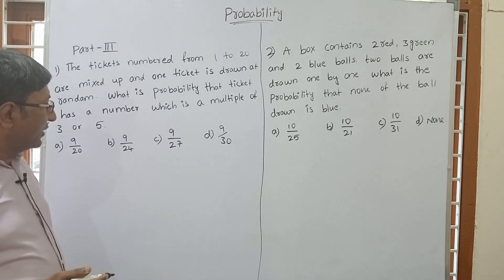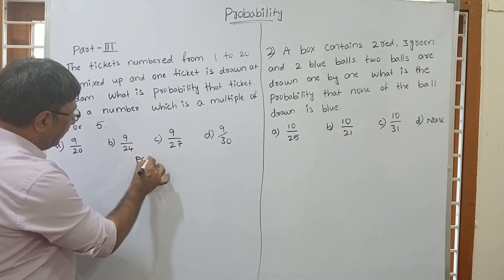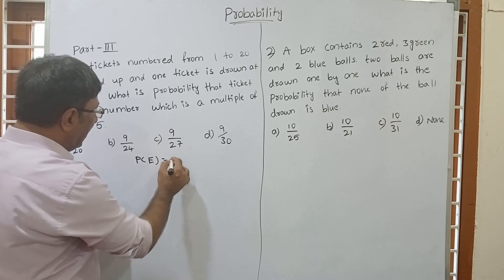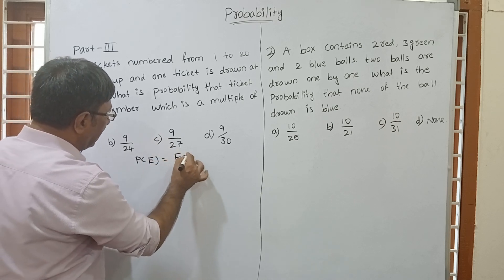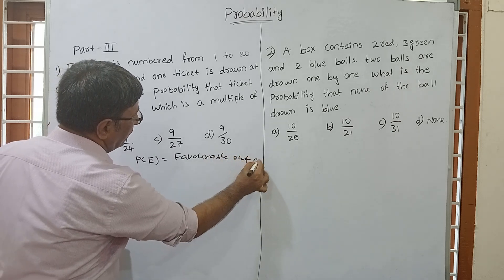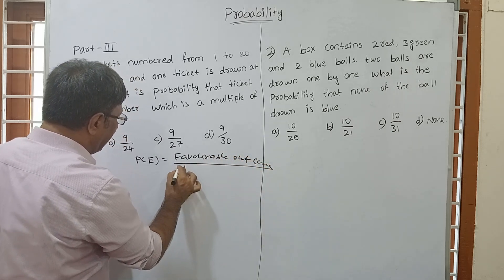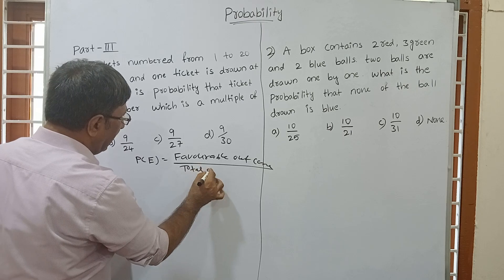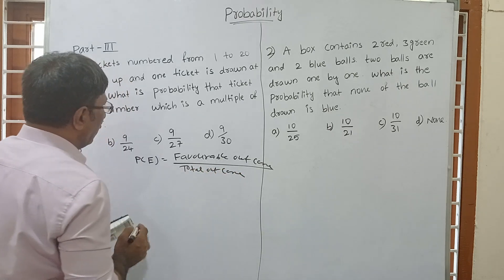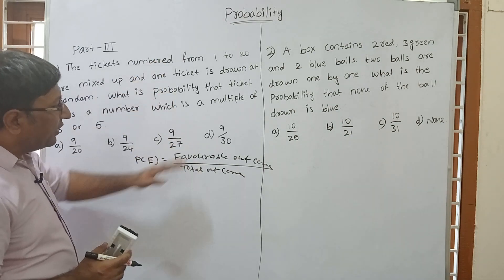You know well what is the basic formula of probability. Probability of any event equals favourable outcomes divided by total outcomes. The question is: ticket numbers from 1 to 20. What is the favourable outcome? Favourable means what we need, and total outcome is the total possibility.